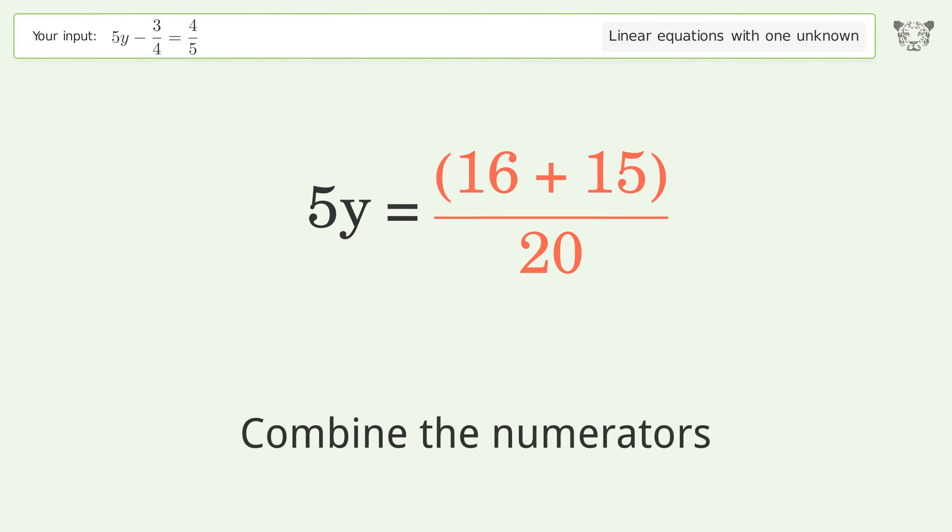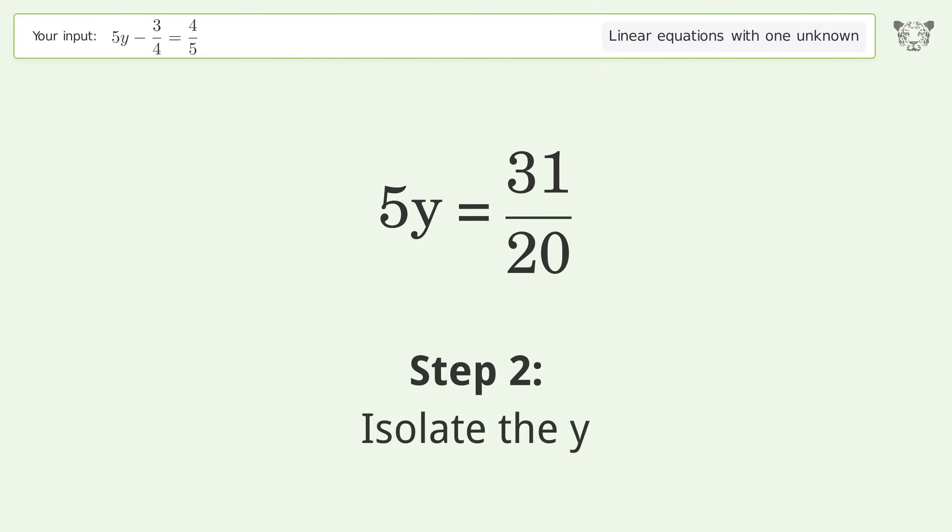Combine the numerators. Isolate the y. Divide both sides by 5.